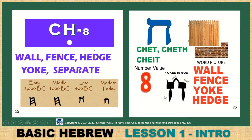Chet — CH, number 8. Use the guttural sound like Bach. A wall, fence, edge, yoke, separate. There is a wall or a fence — CH. It can be spelled several different ways but in the word it will be CH; sometimes just an H, but it should be CH — closed H. Value number 8. We are yoked to God: wall, fence, yoke, or a hedge of protection. The word 'life' has Chet — Chayim.